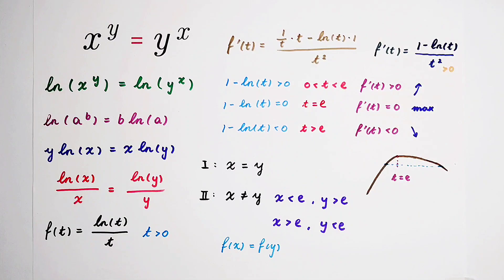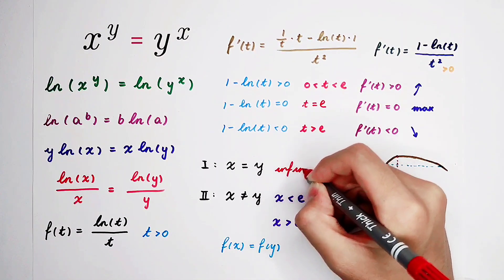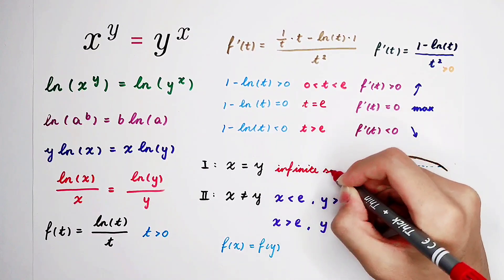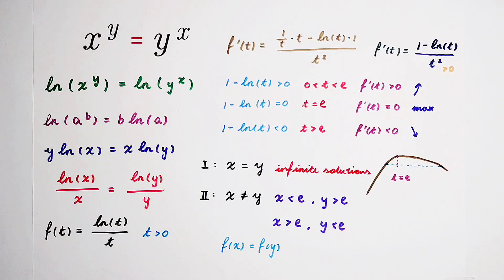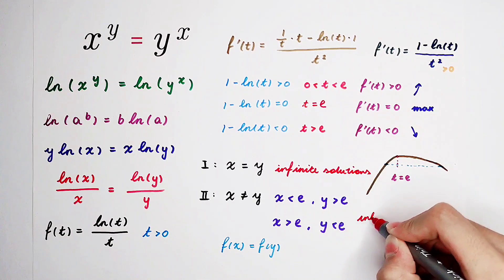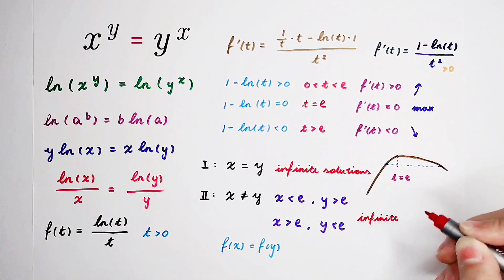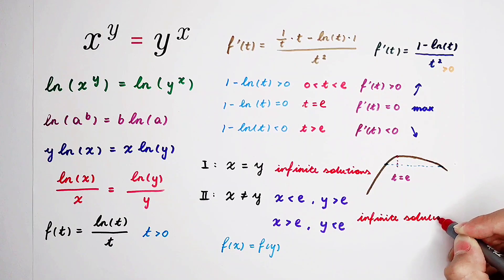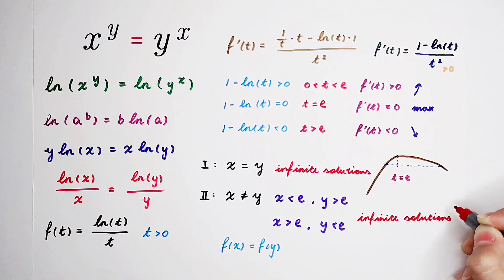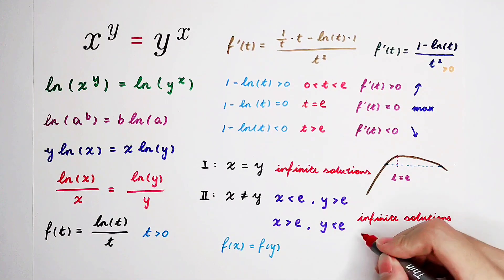So in our first case we have infinitely many solutions, and in our second case we also have infinitely many solutions. For the second case, x and y are on both sides of e.